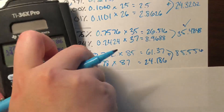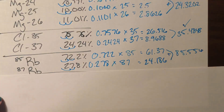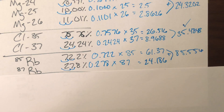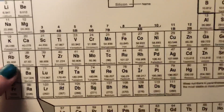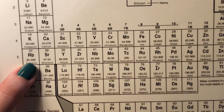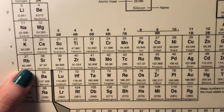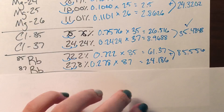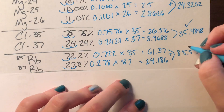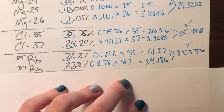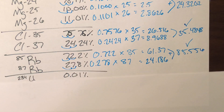Checking that against the real rubidium, its mass on the periodic table is 85.468 — close enough.